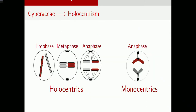That is the background on Schoenus. Now I'm going to talk about holocentric chromosomes, genome size, and polyploidy, because this relates to what I'm doing now. If you divide chromosomes into two major types, you have monocentric chromosomes with localized centromeres, and holocentric chromosomes with centromeres along the length of the chromosome — a diffuse centromere.